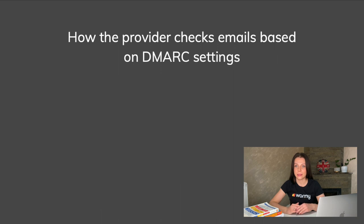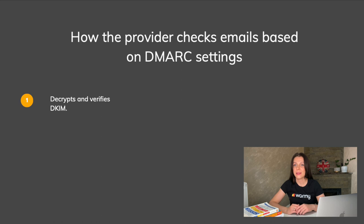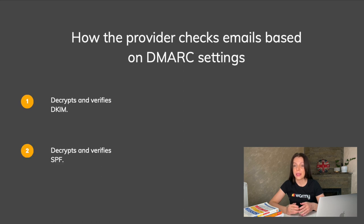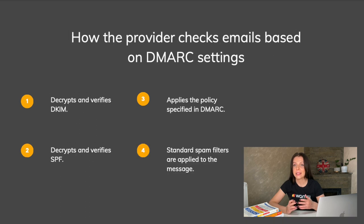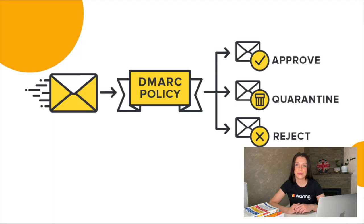After your email is received by the recipient's provider, it checks the reputation of the domain, the presence of the email and domain in blacklists, and the IP addresses of the servers from which the email was sent. As part of this check, the mail provider decrypts and verifies DKIM — was the letter sent from this exact domain or is it a fake? It also decrypts and verifies SPF — is it allowed to send emails on behalf of this domain to this IP? Then it applies the policy specified in DMARC — for example, to send to spam those whose DKIM does not match — and sends a report to the domain administrator. Finally, standard spam filters are applied to the message.